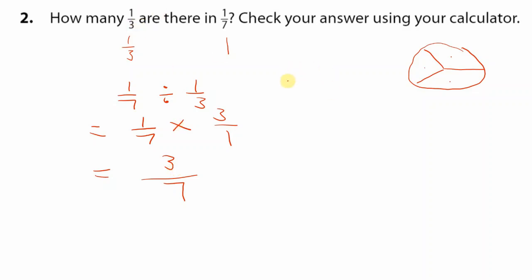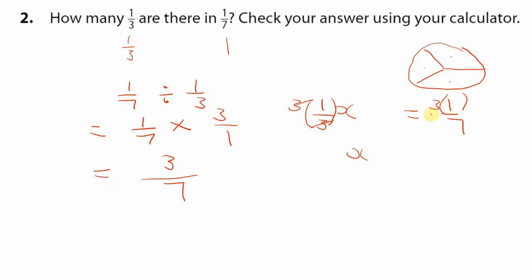Another way to approach this: one-third multiplied by how many gives one-seventh? If there were two thirds you'd multiply one-third by two; if three thirds you'd multiply by three. So we say one-third times x equals one-seventh. We only want x, so we multiply both sides by three to cancel the three on the left, and we get the same answer three-sevenths.